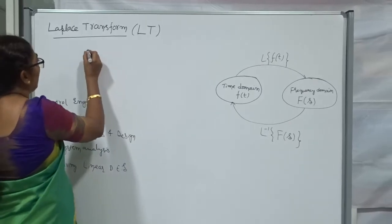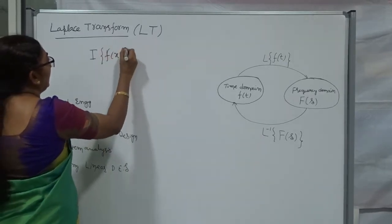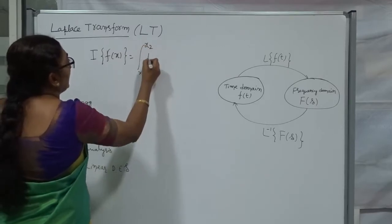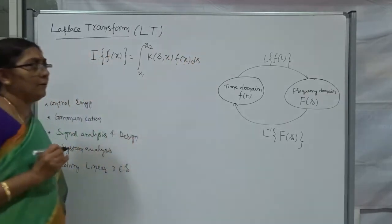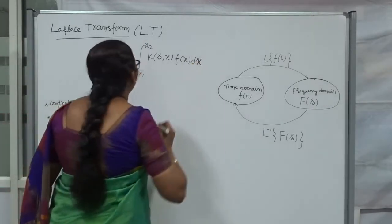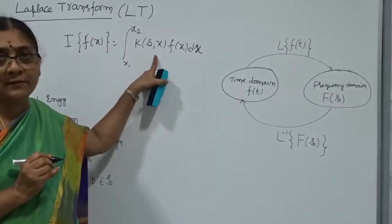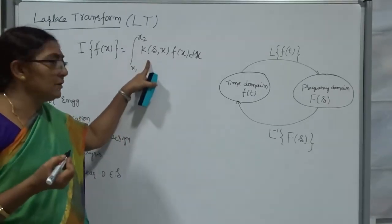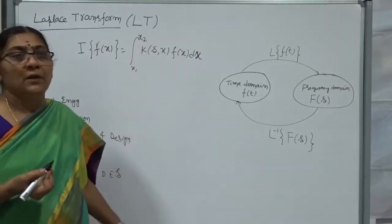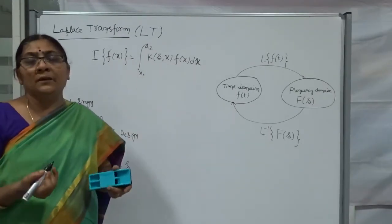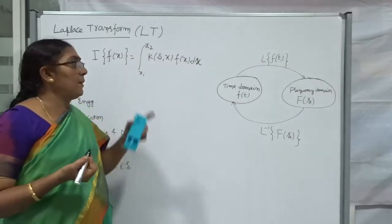The Integral Transform is denoted by the letter I. The Integral Transform of a function f(x) is defined as the integration from x₁ to x₂ of k(s, x) · f(x) dx. This is the formula for the Integral Transform, where k(s, x) is the kernel of the transform. This kernel may be an exponential function, logarithmic function, trigonometric function, or a complex function.